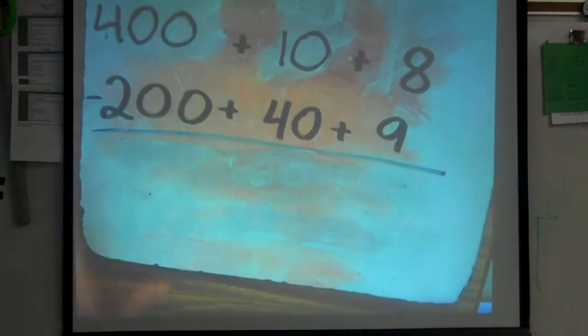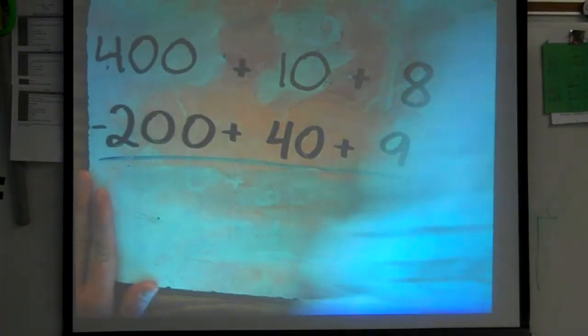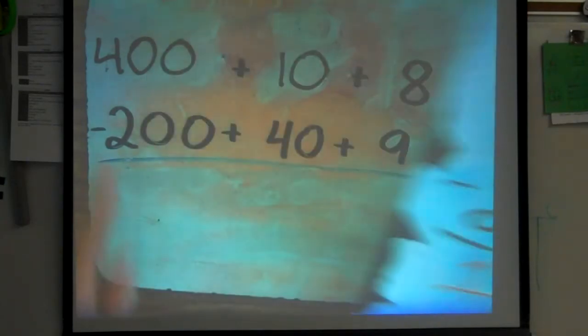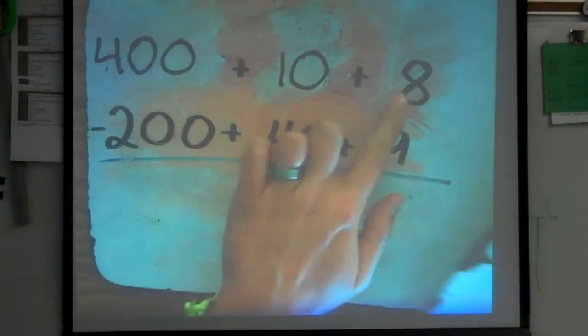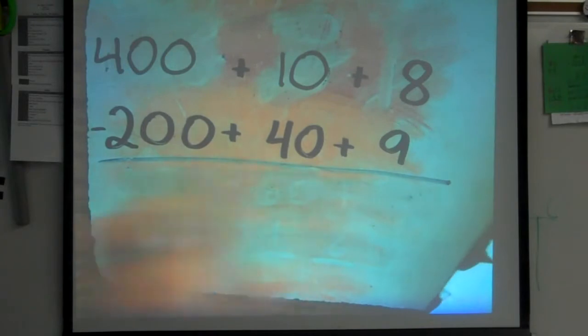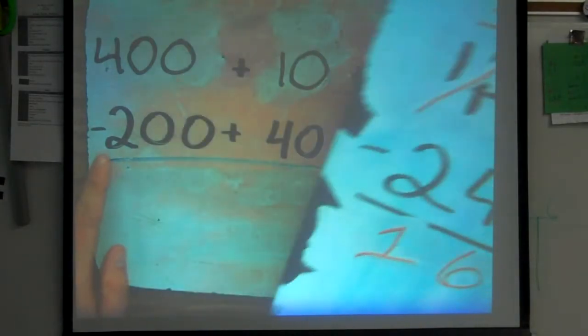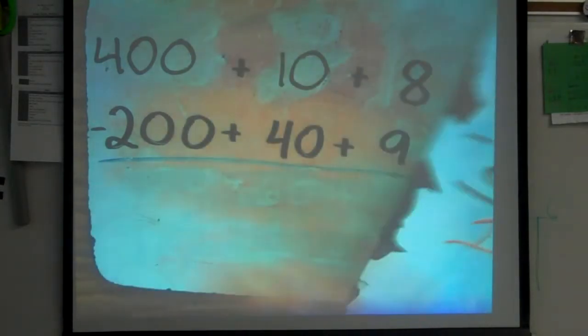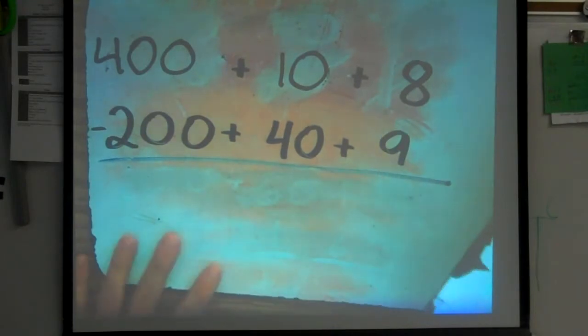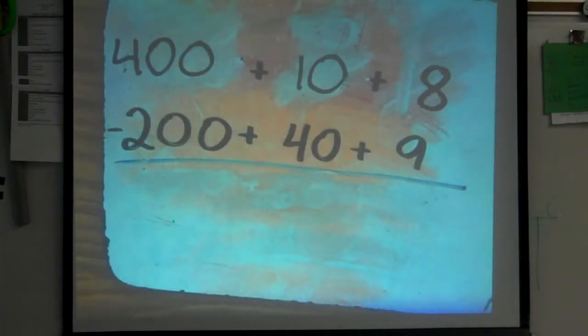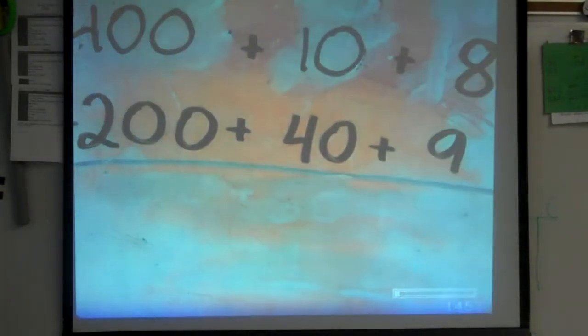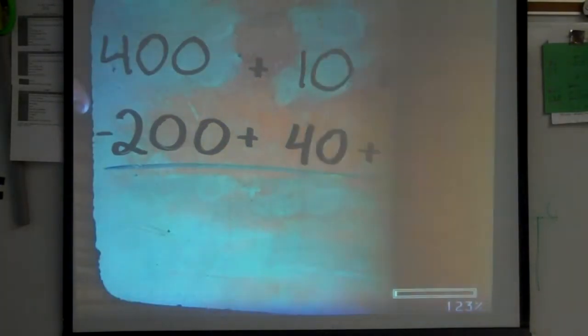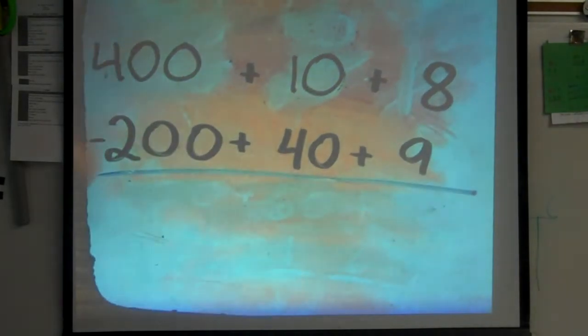Way number 2, to subtract. This is using expanded form. As you can see, I still have 418. I have 4 hundreds, 1 ten, 8 ones, along with 249. I have 2 hundreds, 4 tens, and 9 ones. Now this is really good for the kids that like to do things visually, to understand why. Instead of just taking a number and moving it, what happens?